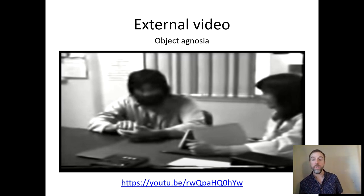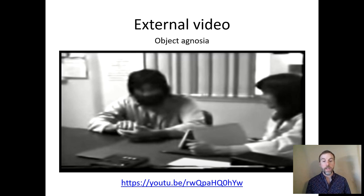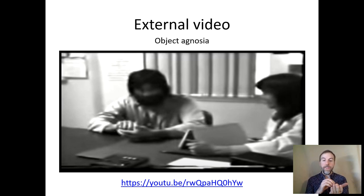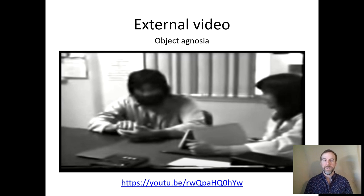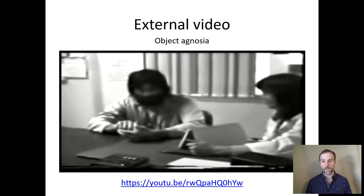He couldn't tell what it was — that ability is done by the ventral stream, which he has damaged. He can still see; he clearly sees the picture and can see around the room. What eventually helps him guess is that his hands begin to act out what he would do on that object — using vision for action, done by the dorsal stream, a completely different area of the brain that is intact. This dissociation is difficult for us to understand because normally both streams are intact.